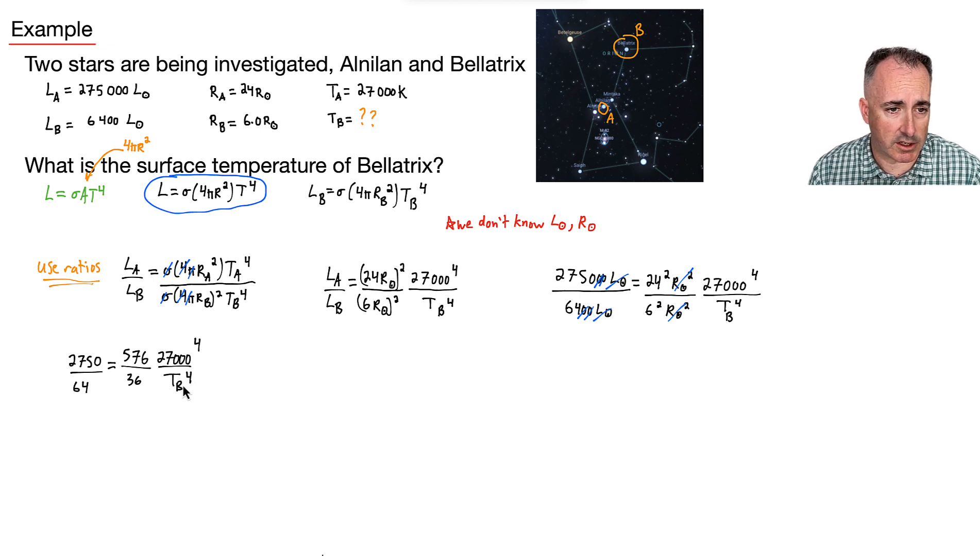Well, if I want to get TB to the fourth on its own, I'm going to put it on the left side. So I'll say TB to the fourth. That's going to equal, and I'm just going to move these by flipping them. So that means it'll be 64 will be on top. So I'll have a 64 here.